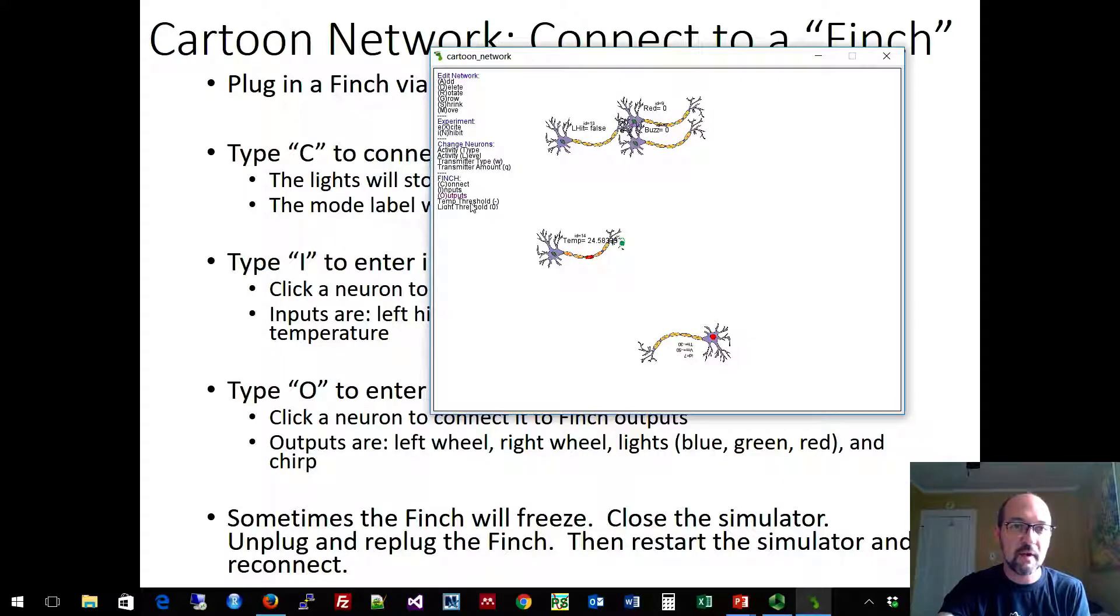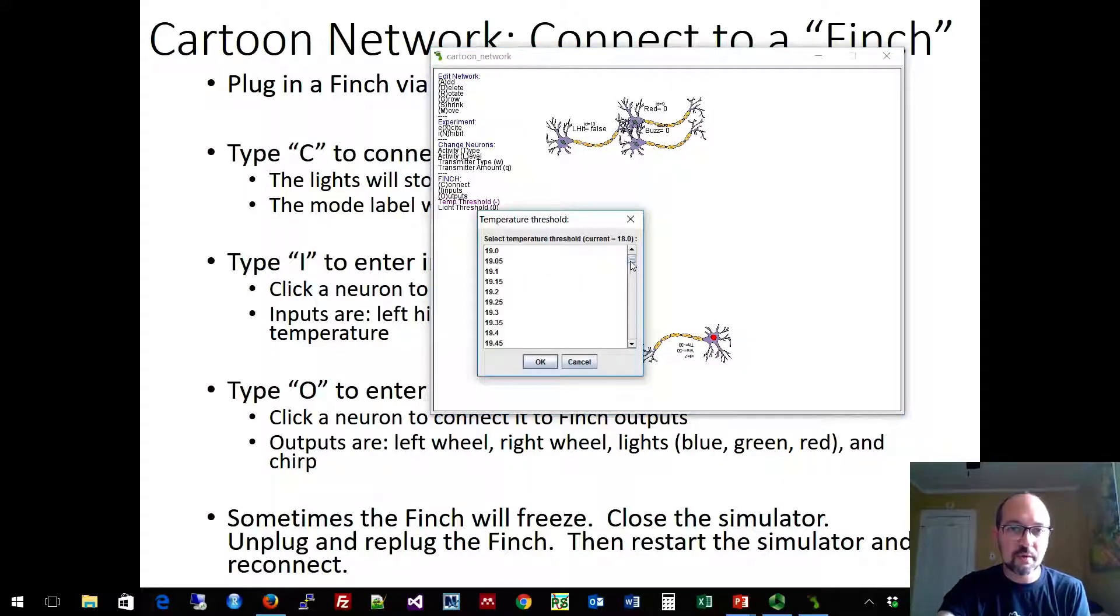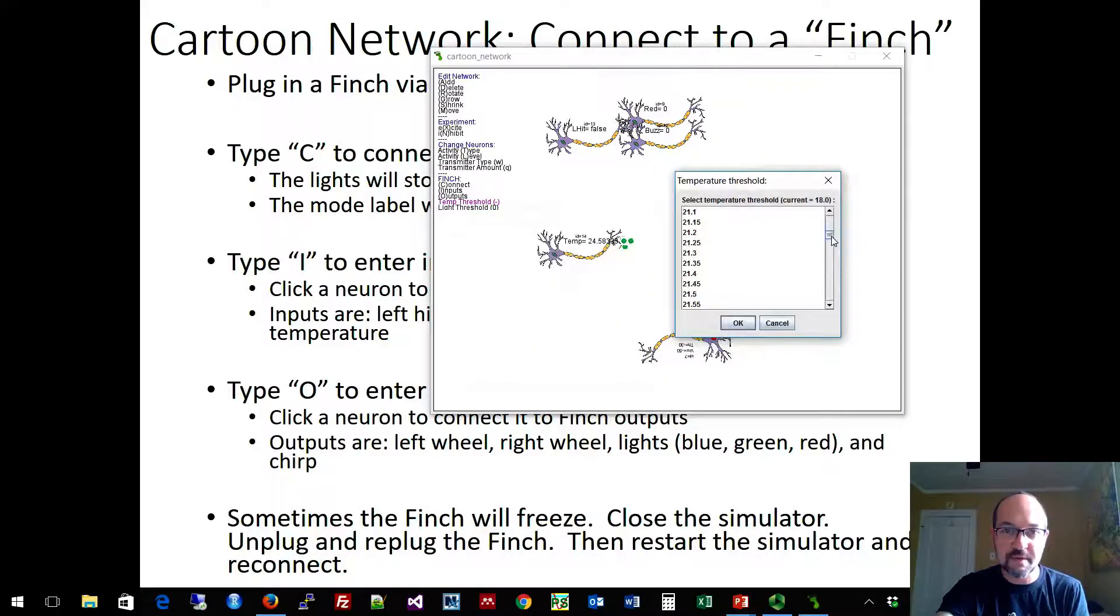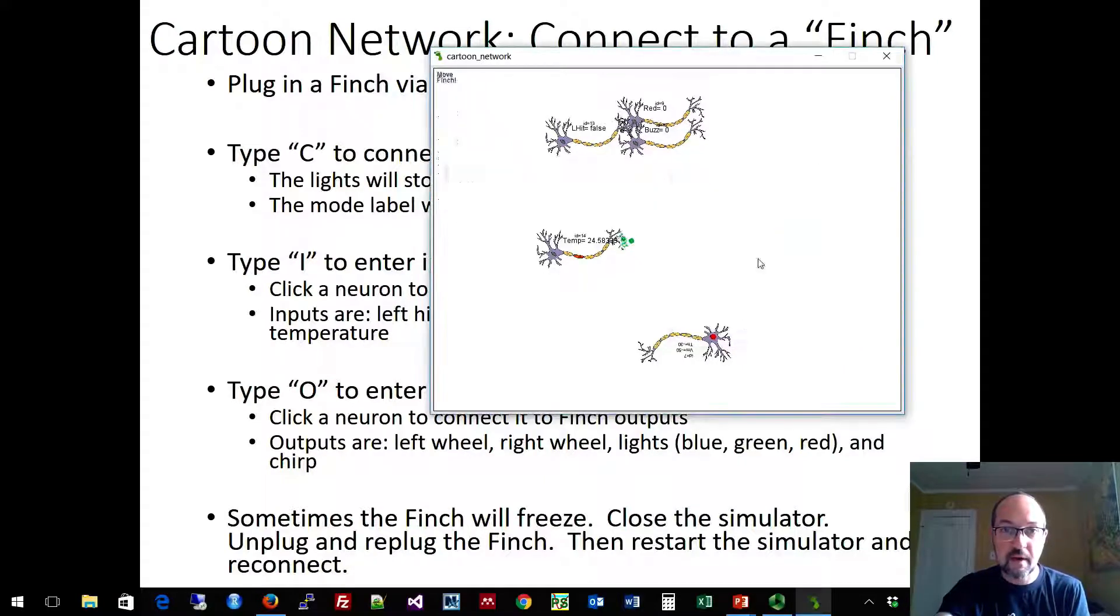Now what we can do is go to the menu system and set our temperature threshold. And we can set the threshold for activity in that sensor to be just a little bit above whatever your room temperature happens to be. So since it's 24.58, I'm going to scroll down here and find 24.6. And I'm going to hit OK.